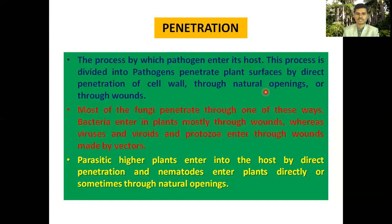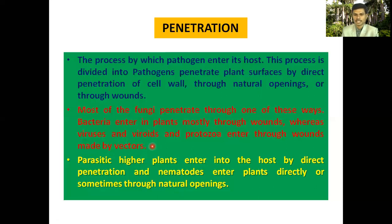Most fungi penetrate by one of these ways. Bacteria enter plants mostly through wounds. Viruses and viroids enter through holes made by vectors — vectors such as aphids and thrips initially puncture the host for absorption of juice, a wound or opening develops, and through this opening the viruses gain entry into the host and spread.